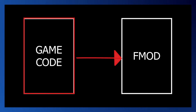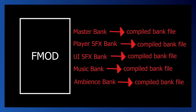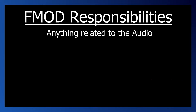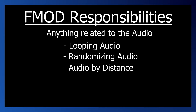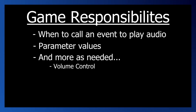For your game to be able to interact with your FMOD project, you'll need to build the FMOD project first. When you build an FMOD project, it's taking each bank and compiling those down in a way the game code can interact with them. To sum things up, anything related to the audio itself — which includes logic like looping audio, randomizing audio, audio by distance, varying effects, and much more — are usually best handled within FMOD. And the game code mostly just cares about when to call a specific event to play the corresponding audio, as well as any parameter values needed to adapt those events to what's going on in the game. Most things in the FMOD project can also be accessed through the game code as needed, allowing the game code to do things like control the volume, change things about the overall mix and much more.